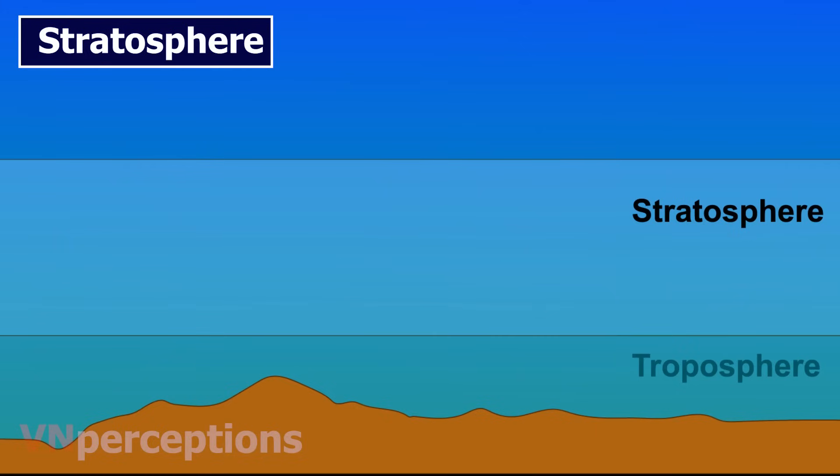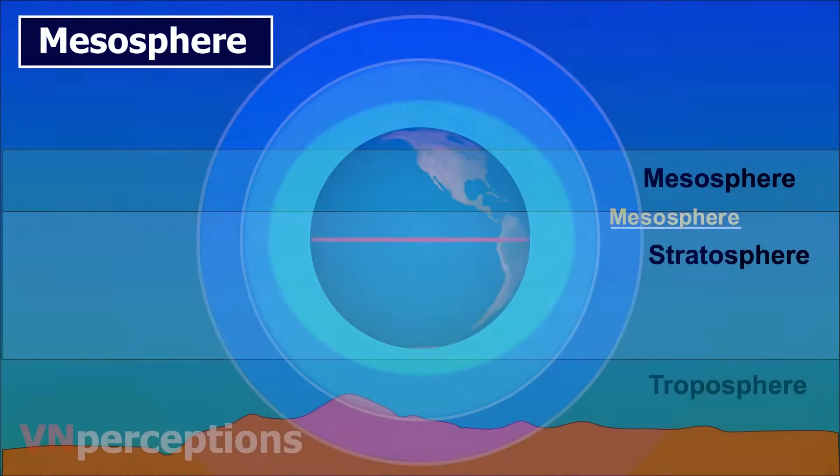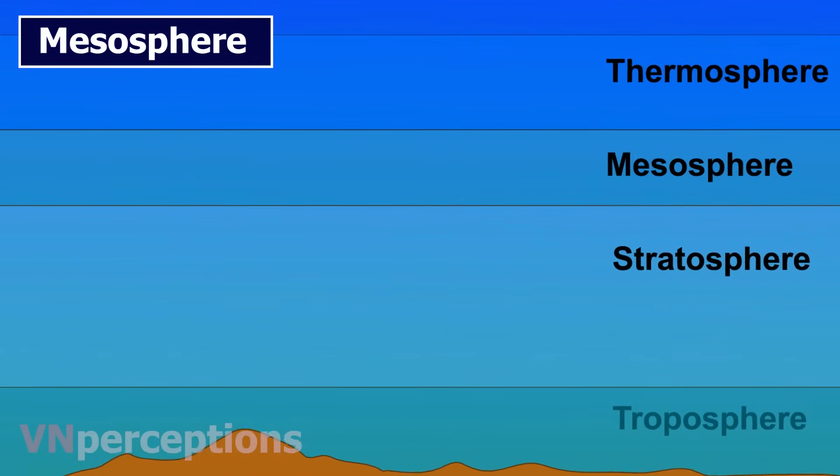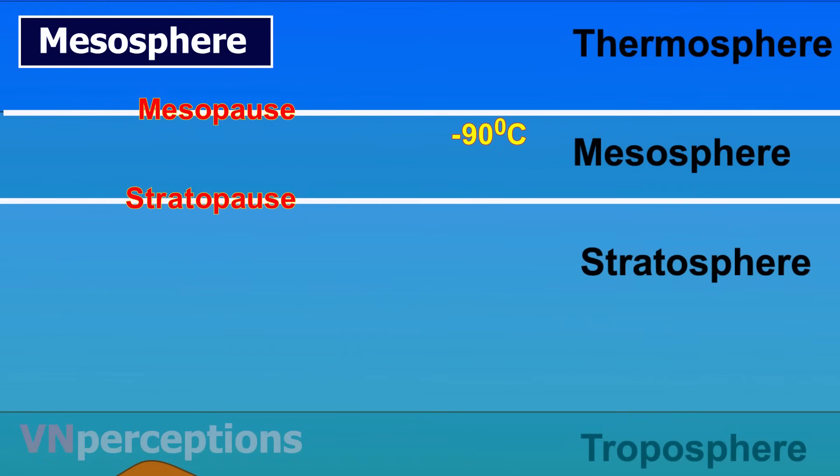Next comes mesosphere. The mesosphere is a layer of Earth's atmosphere. It is directly above stratosphere and below thermosphere. It extends from about 50 to 85 kilometers above our planet. Temperature decreases with height throughout the mesosphere. The coldest temperatures in Earth's atmosphere, that is about minus 90 degrees Celsius, are found near the top of this layer. The boundary between the mesosphere and the thermosphere above it is called the mesopause. At the bottom of the mesosphere is the stratopause, the boundary between the mesosphere and the stratosphere below. The mesosphere is difficult to study, so less is known about this layer of atmosphere than other layers.